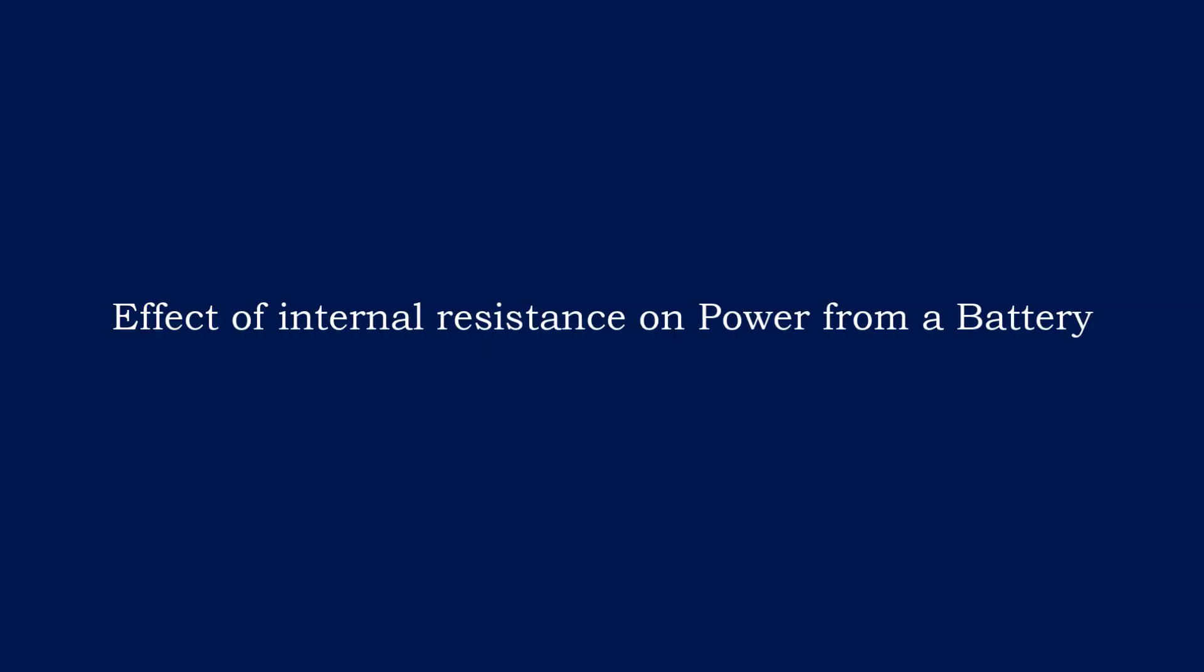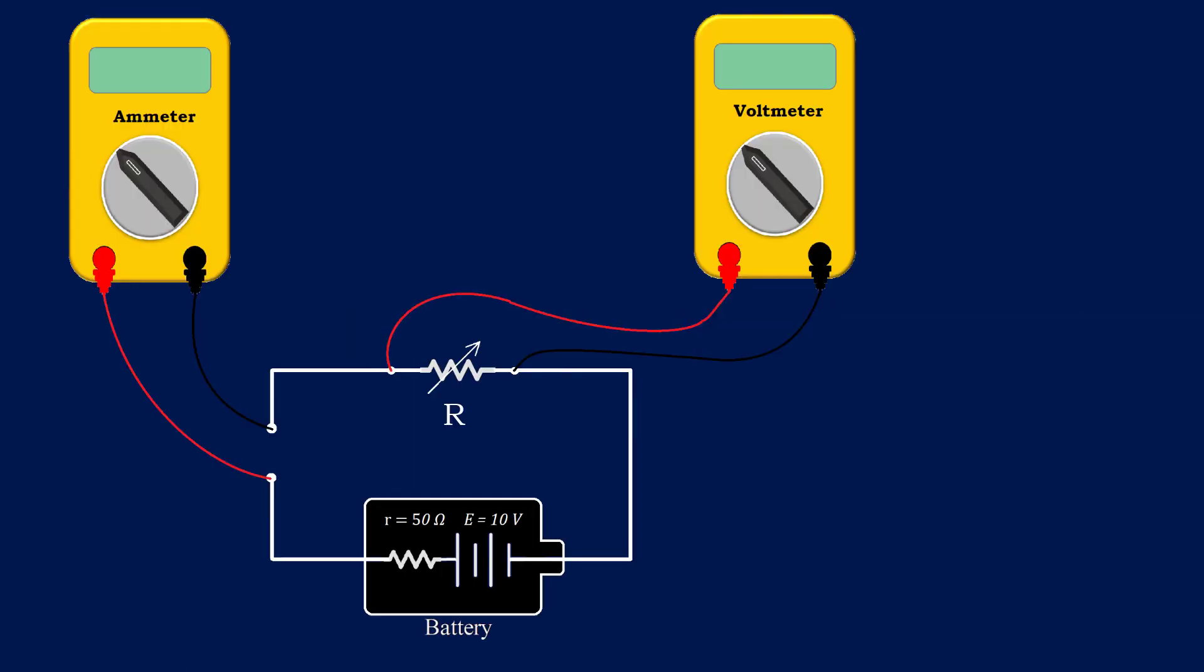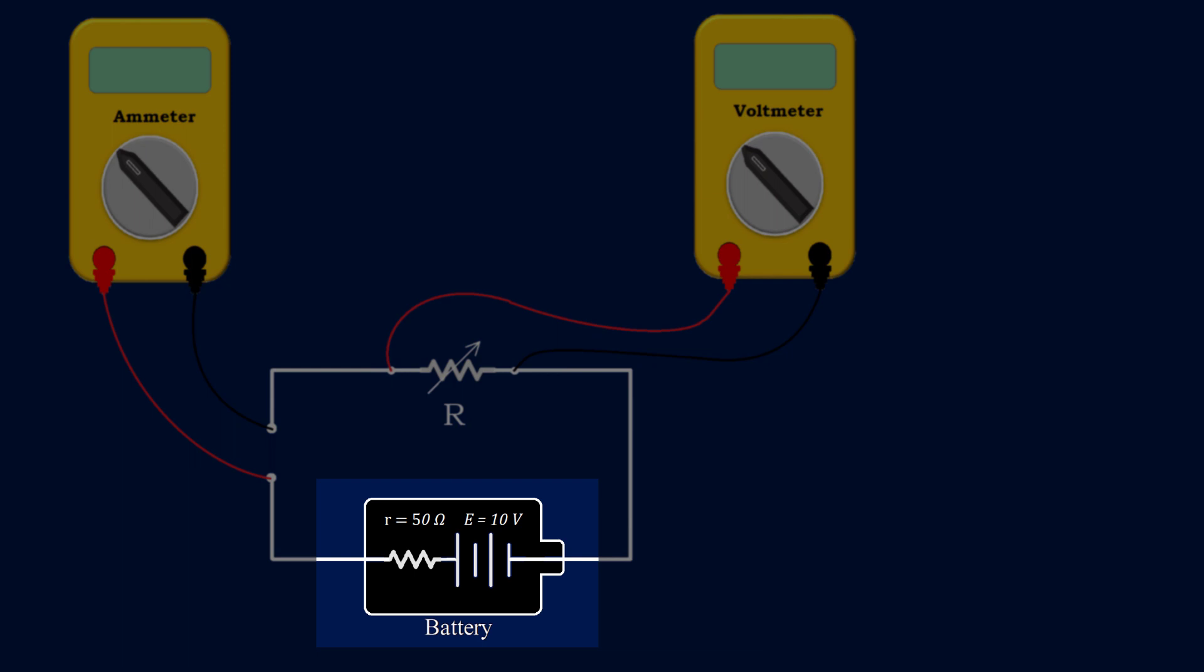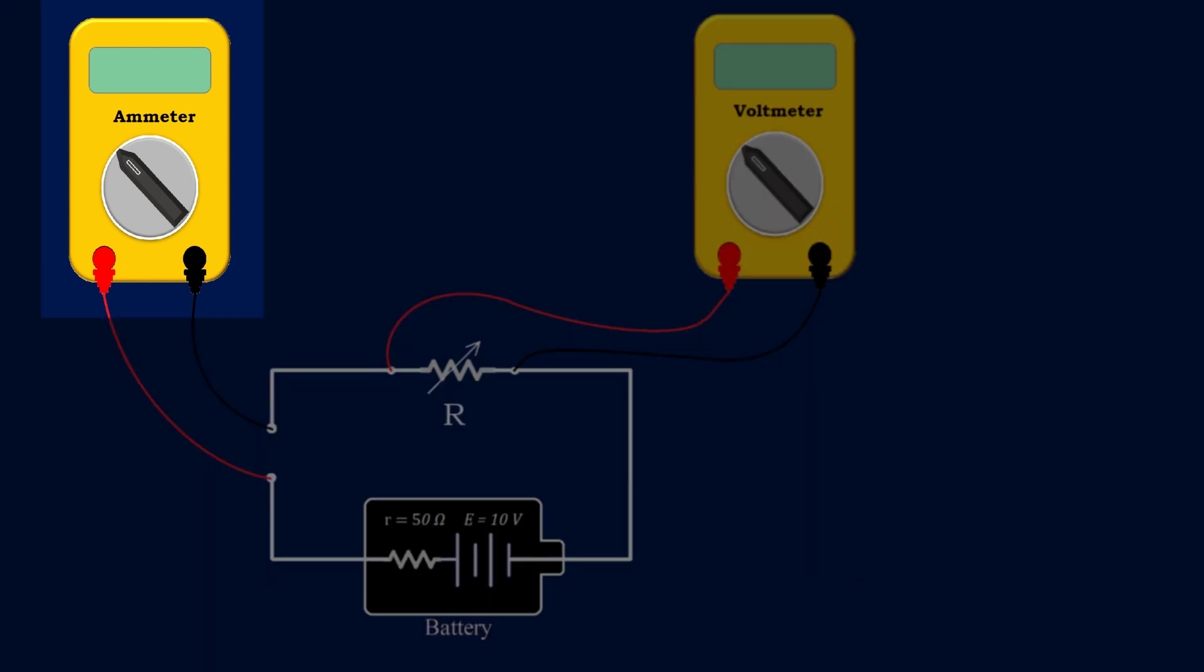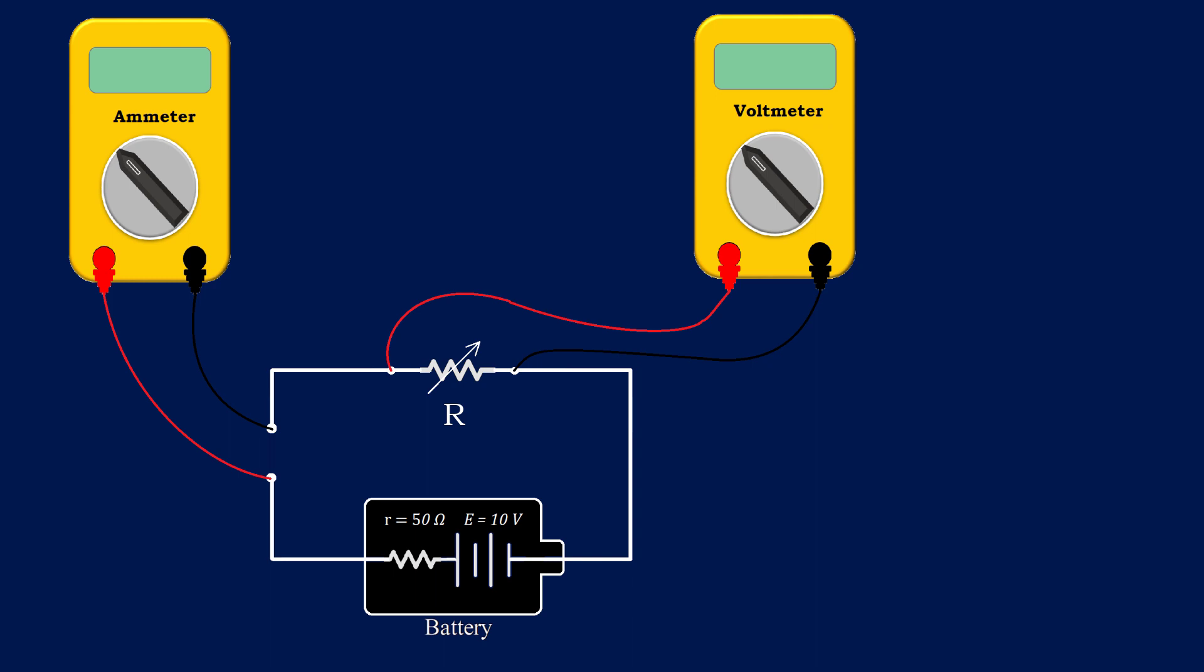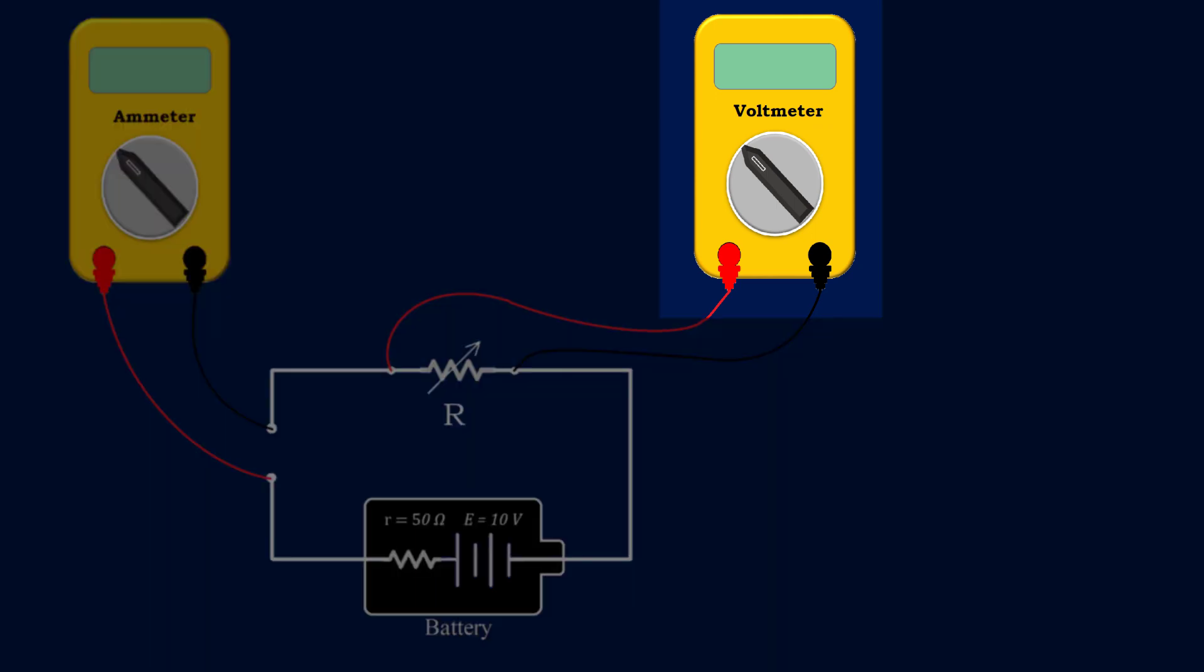Now, discuss the effect of internal resistance on power delivered by the battery to the sink. To understand this, consider a battery of EMF 10 volts and internal resistance 50 ohms attached to a variable resistor. An ammeter is attached in series to measure the current passing through the resistor, and a voltmeter is attached in parallel to measure the potential difference across the resistor.